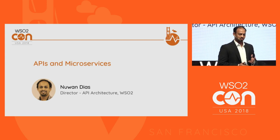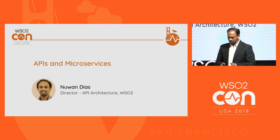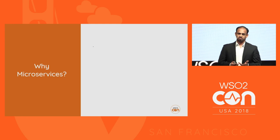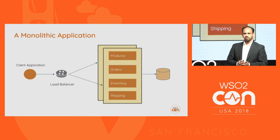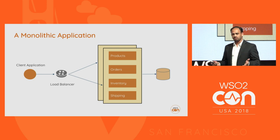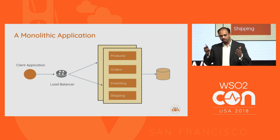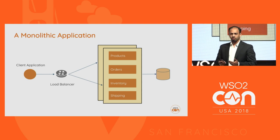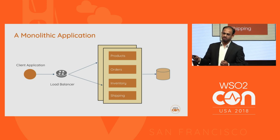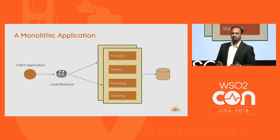What I'll be trying to do is cover the role that APIs play in a microservices architecture. To begin with, I'd like to talk about why microservices in the first place. To explain that, I'll use a monolithic application of an e-commerce system. If you look at a traditional monolithic application, it will have various functions all bundled into a single execution runtime — functions to browse your product catalog, make orders, check inventory, and handle shipping.